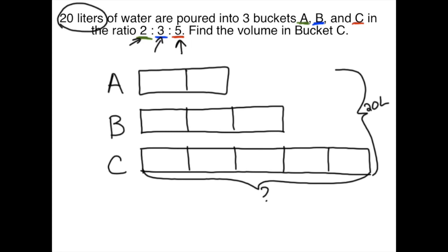Now do I have enough information to find what one unit equals? I do because I know my total number of units: one, two, three, four, five, six, seven, eight, nine, ten. And I know the total quantity in those units. So one unit equals 20 divided by 10 which equals 2 liters.